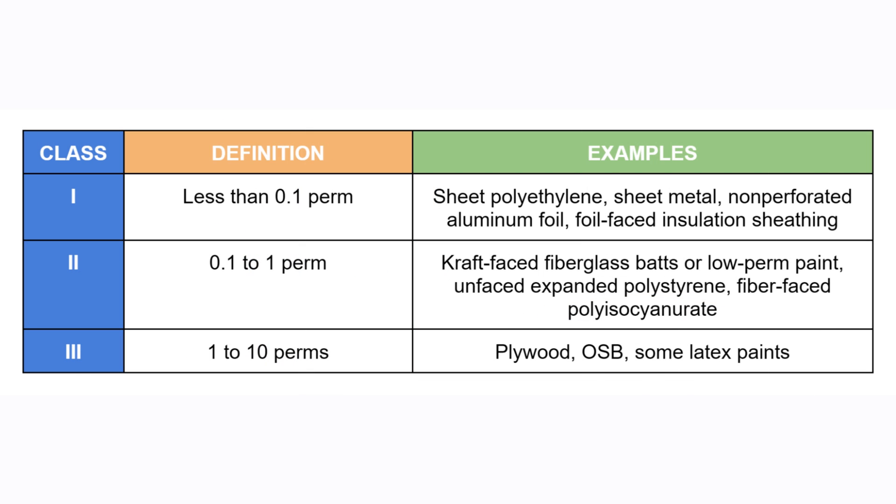Anything above 10 perms is considered to be vapor permeable, but sometimes you need a product that's on the lower end of vapor permeable, and sometimes you need a material that's as vapor permeable as possible.